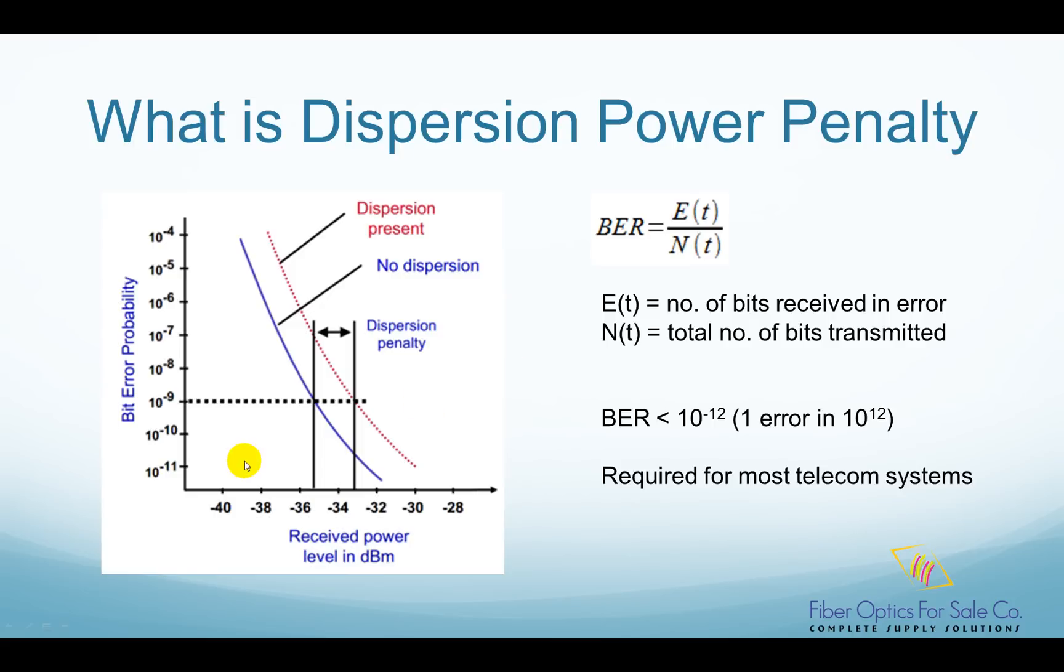Fiber dispersion increases a fiber optic link's bit error ratio. In order to maintain the same bit error ratio, more optical power needs to be transmitted by the laser transmitter. This increased optical power is called power penalty.